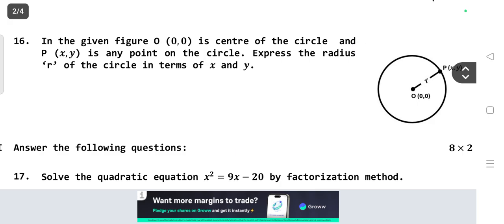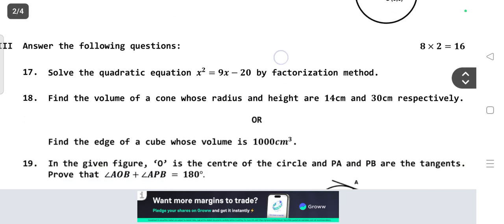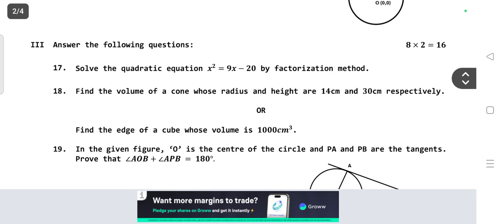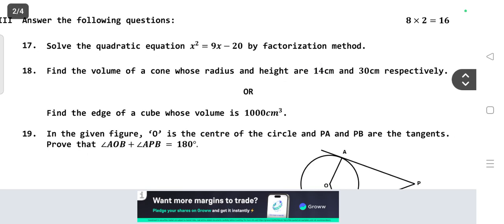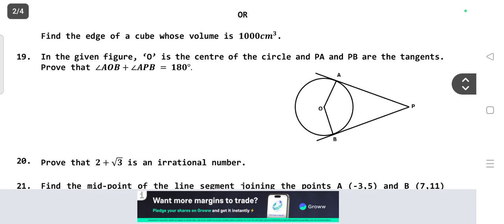Next, two mark questions, eight questions, each carries two marks. Solve the quadratic equation by factorization method. Question number 18: Find the volume of a cone whose radius and height are 7 centimeters and 13 centimeters respectively. OR: Find the edge of a cube whose volume is 1000 cubic centimeters.